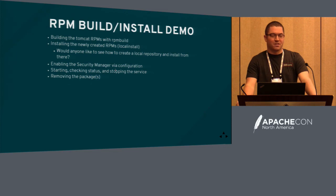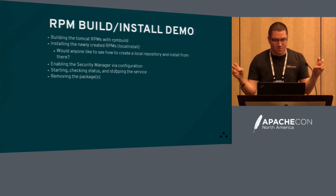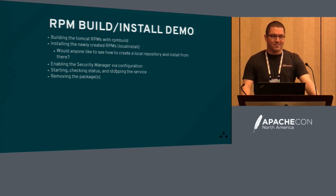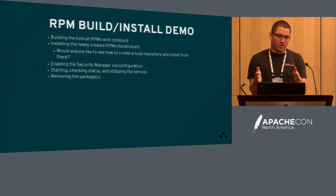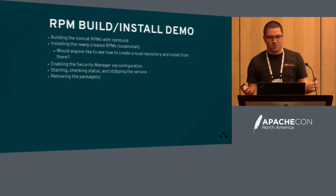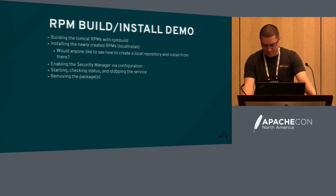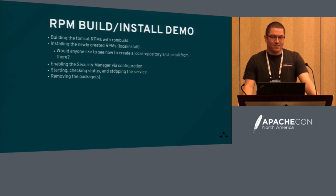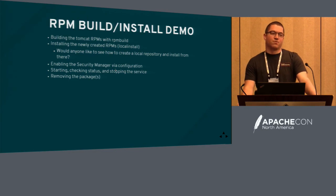If users wanted a later version of Tomcat than what RHEL offers, they could purchase separate entitlements for the JBoss Web Server product, which right now includes Tomcat 7.0.70 with some CVE fixes and 8.0.36. So you can pick which version to run. The EPEL extras packages repo is not a Red Hat-supported package, so I can do whatever I want there just like Fedora — I can continuously push updates to EPEL 6 and give customers the latest if they want it.